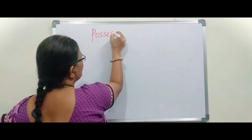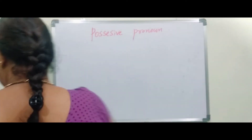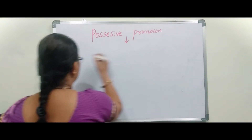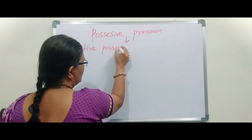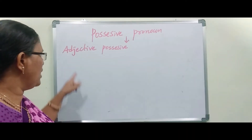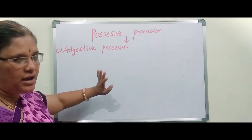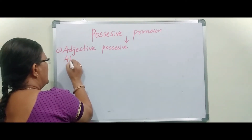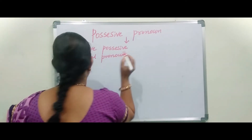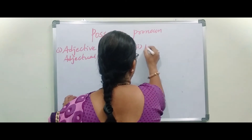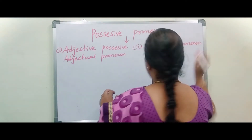Possessive Pronoun has two forms. The first form is Adjective Possessive, also called Adjectual Pronoun — both names refer to the same thing. The second form is Possessive Pronoun.